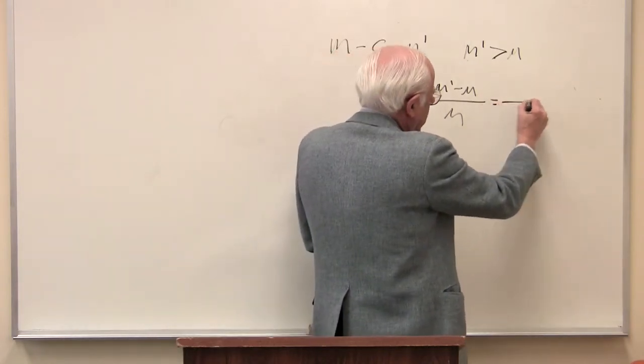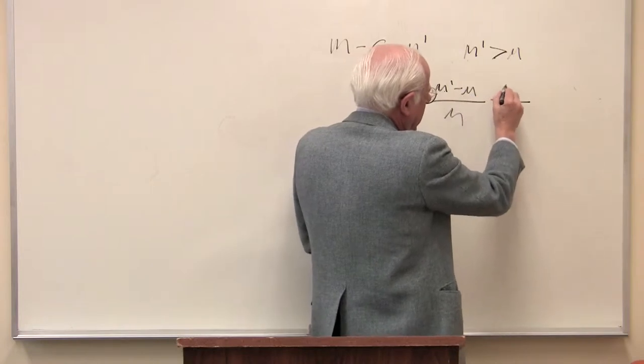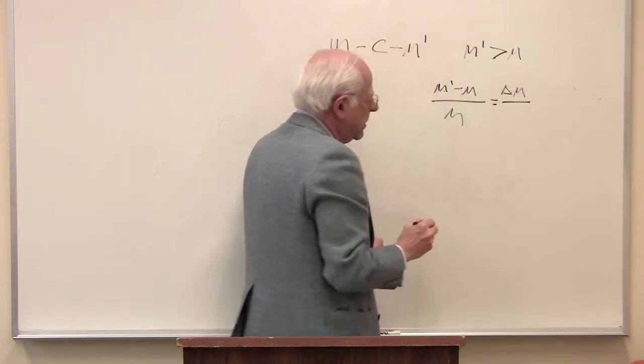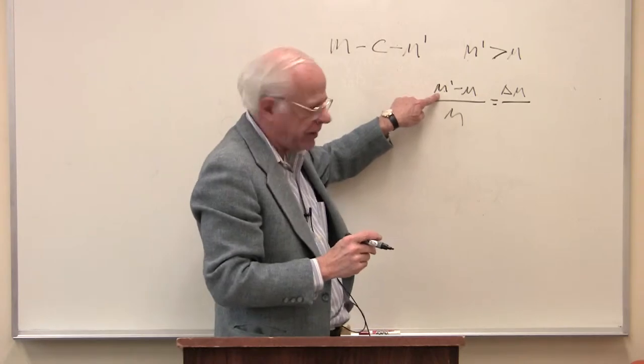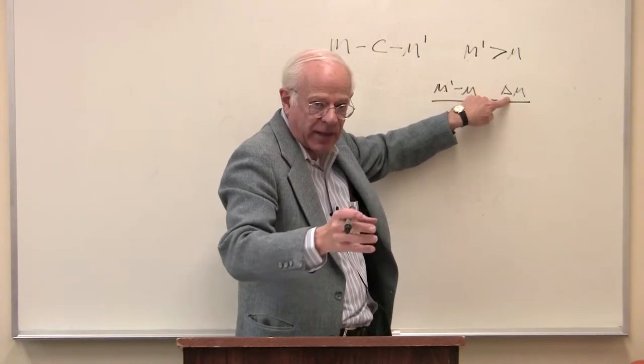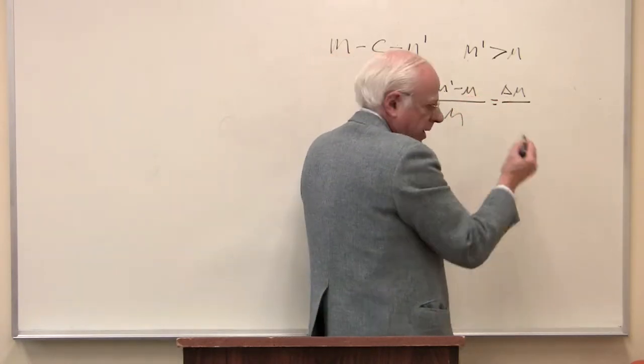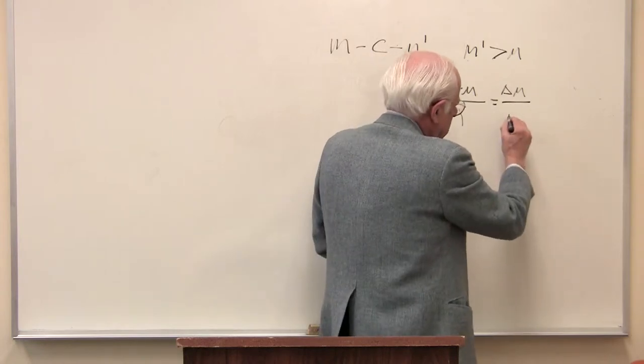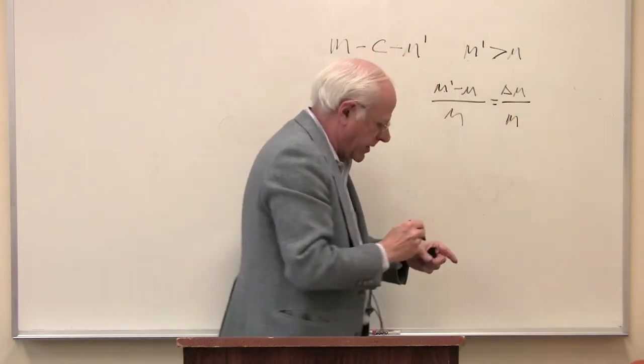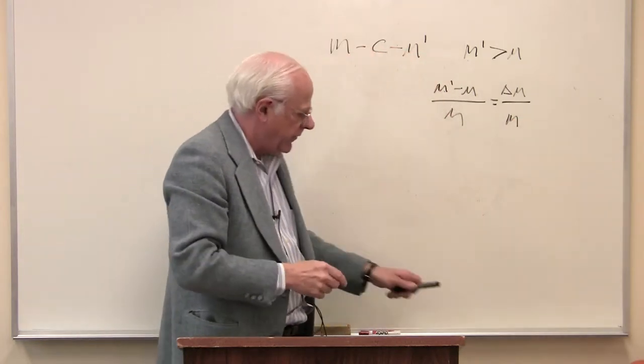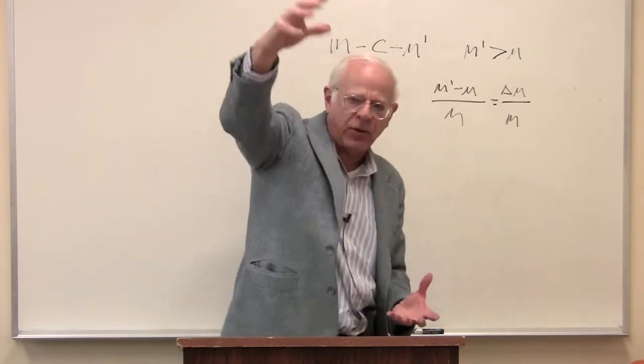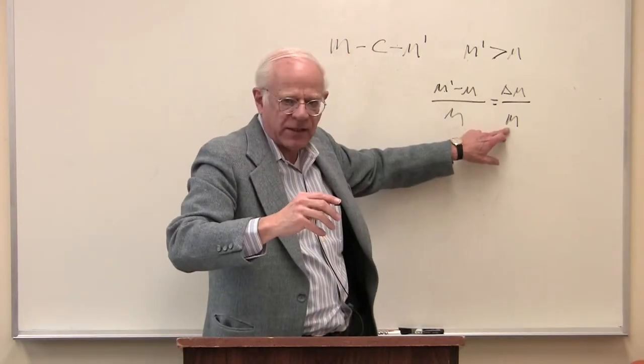In the numerator, M prime minus M, we can call that the change in money. If you start with 100, you ended up with $110, this would be 10, 110 minus 10, over M where you started, $100. So this is the rate of change, literally, of a capitalist in expanding his or her value. And when that's going up, the capitalist is being successful.